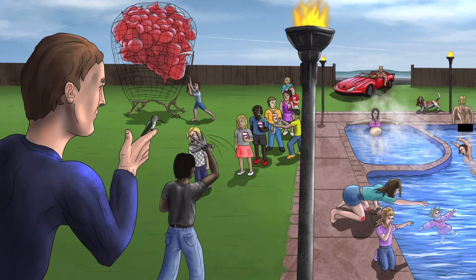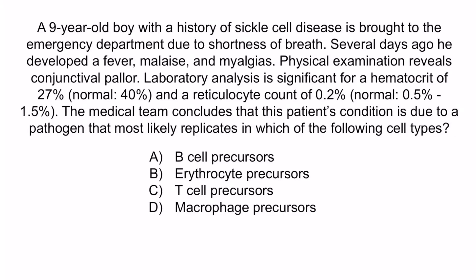From the image, recall that the kid popping the balloons is here to help you remember that parvovirus B19 replicates in the erythrocyte precursors in the bone marrow. Many viruses replicate in lymphocytes, such as HIV. However, parvovirus B19 does not, so A and C are incorrect. Also, bacteria such as TB replicate in macrophages, but again, parvovirus B19 does not, so D is incorrect. Remember, parvovirus B19 replicates in erythrocyte precursors, so the correct answer is B. And with that, we've covered everything you need to know for parvovirus B19.